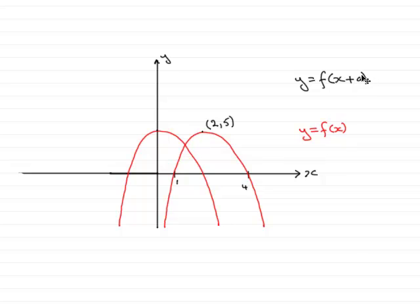But we're moving it to the left, so the a value has to be positive. And you can see that we've slid the graph two units to the left, so that means the a value has got to equal 2.